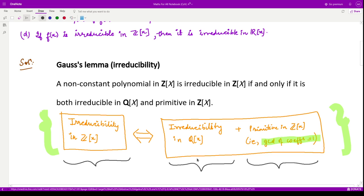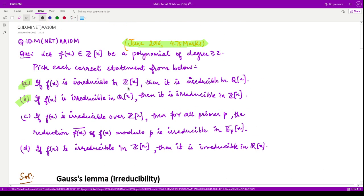Now the other way round, if these two conditions are there then it is irreducible in Z[x]. So accordingly in the question they have not mentioned anything about primitive, whether the polynomial is primitive or not. So we cannot say anything about this option.